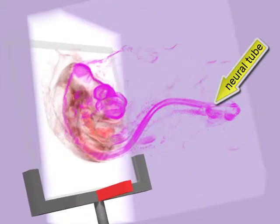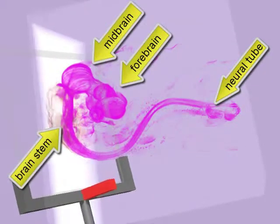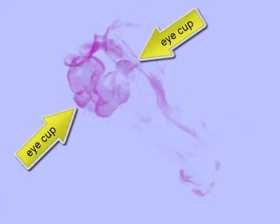By further reducing density in our 3D reconstructions, we can isolate the neural tube and the brain. Note the early eye cups, the future retina, that form out of the brain.